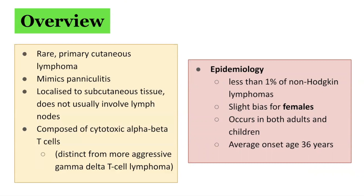In terms of the epidemiology, less than 1% of non-Hodgkin lymphomas is comprised of subcutaneous panniculitis-like T-cell lymphoma. It has a slight bias for females. It can occur in both adults and children, and the average age of onset is 36 years.